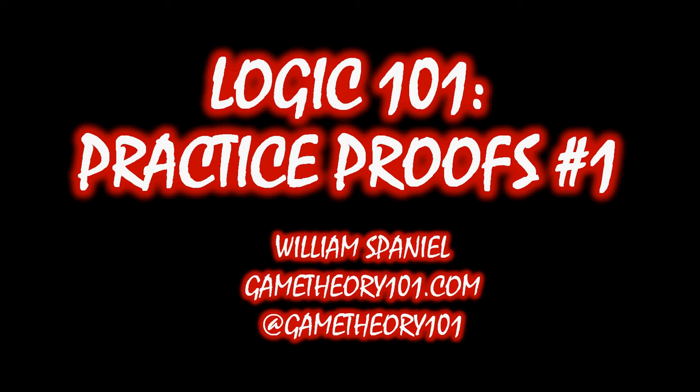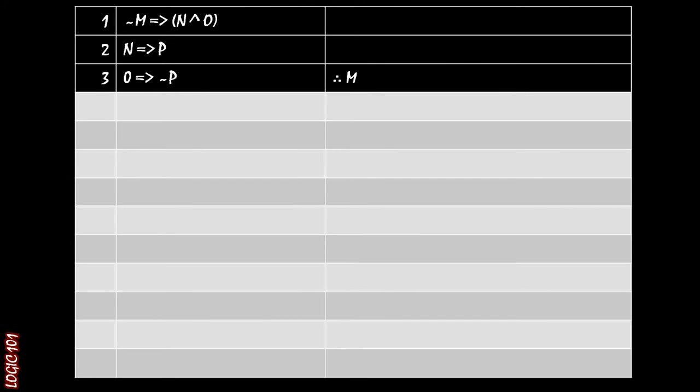So let's go ahead and look at the first problem. I have gone ahead and for the interest of time written these out. So the premise number one is not M implies N and O. Premise number two is N implies P and premise number three is O implies not P. And we're trying to conclude M. So now would be a good time to pause the lecture if you want to try this out on your own. And otherwise I'm going to go ahead and try to solve this.